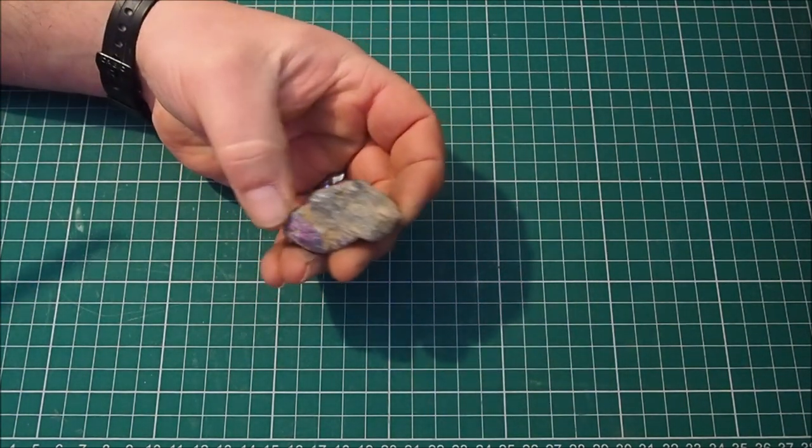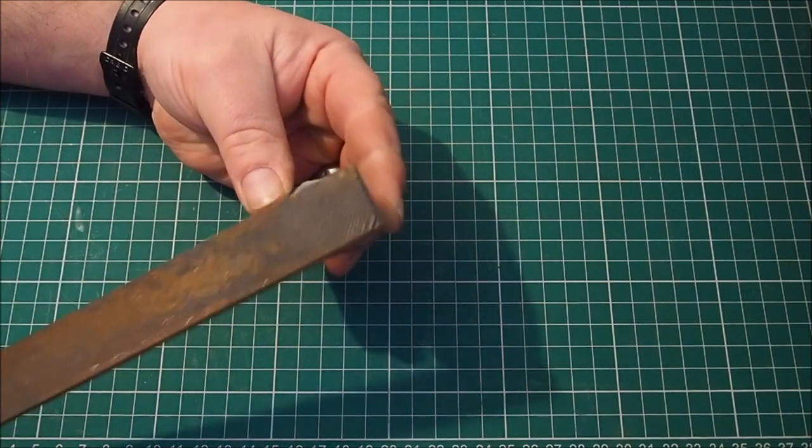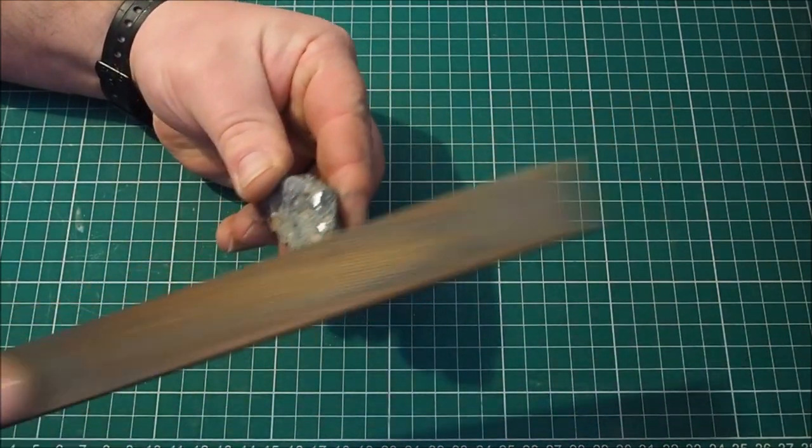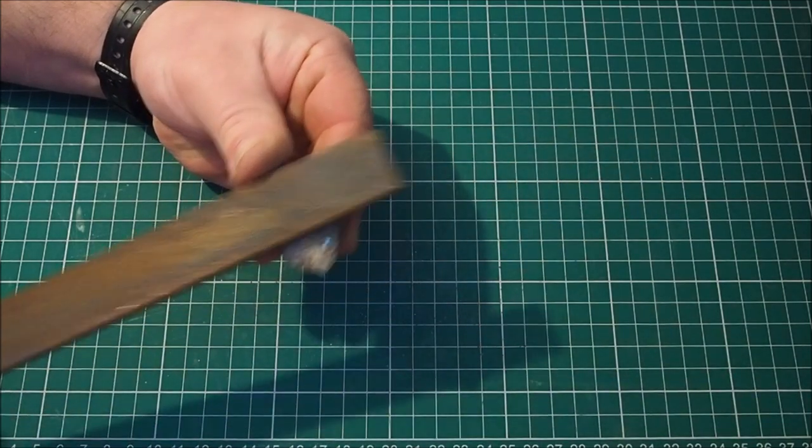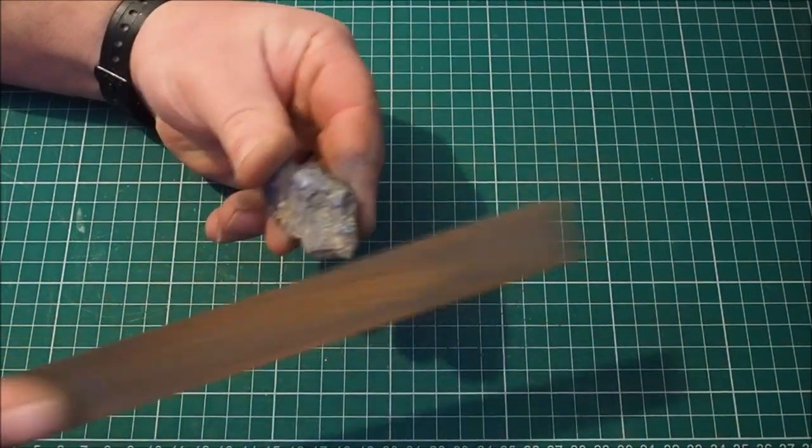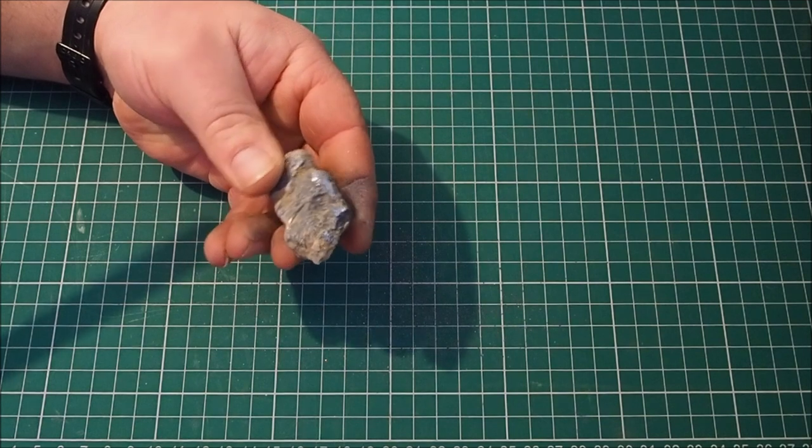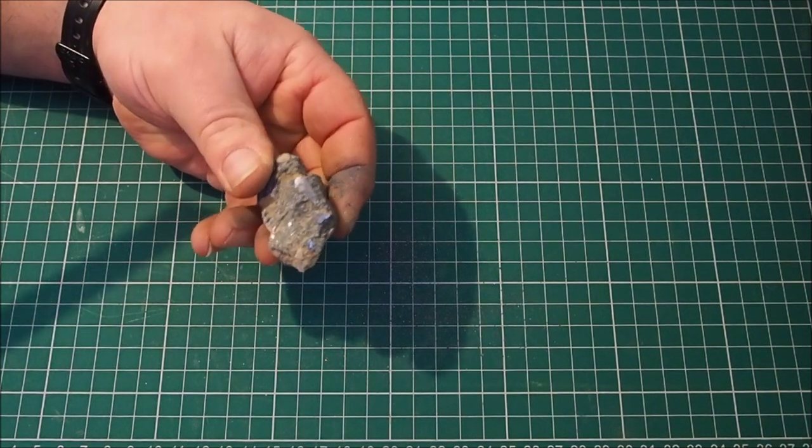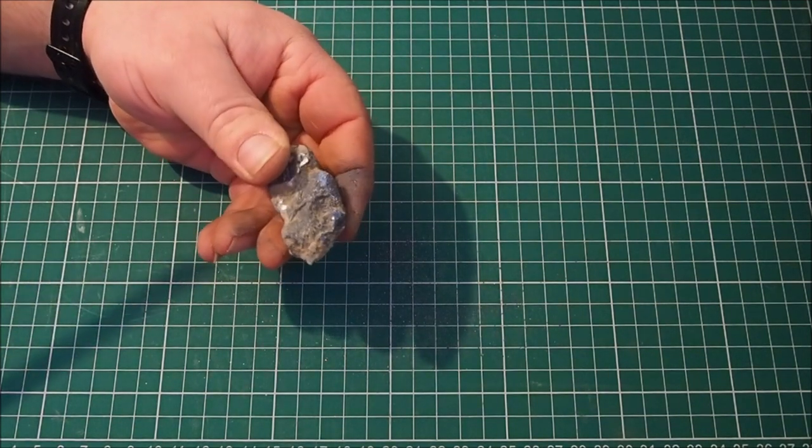If you take a dull piece of lead ore just off the floor, you can actually very easily polish it up. It's got a file here and you can see how that really starts to sparkle very quickly. But if we left that outside that will soon go dull as it kind of patinas over again.